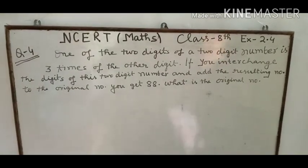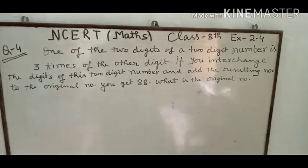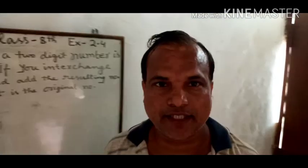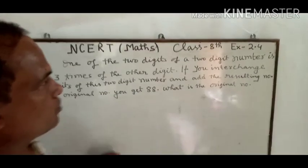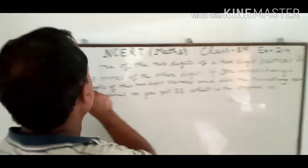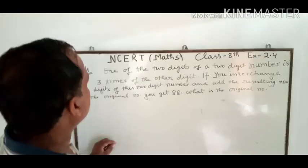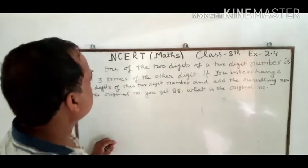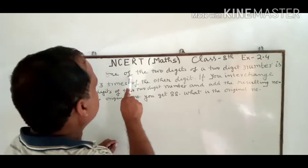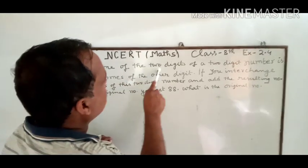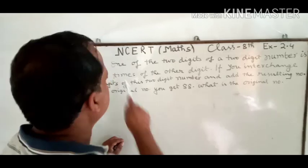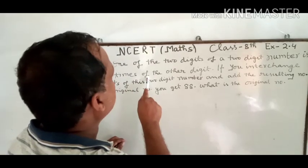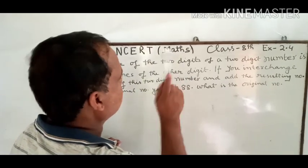Good morning my dear students. Today I am going to discuss Exercise 2.4, Question number 4. Question number 4 says: one of the two digits of a two-digit number is three times the other digit.